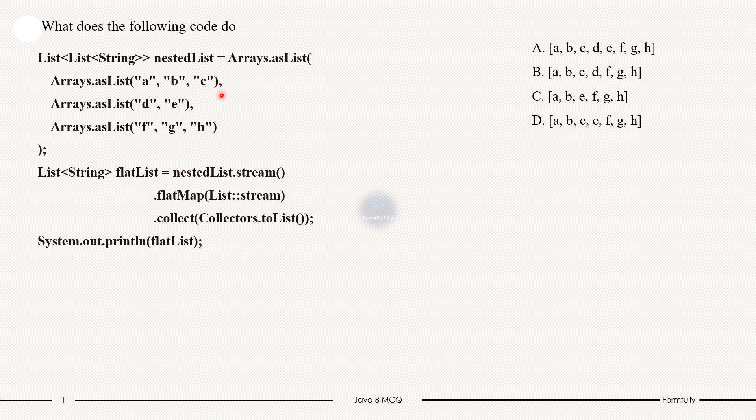Then moving towards next step, that is nestedList.stream(), which first converts the nested list into a stream using nestedList.stream(). At this point, each element in the stream is still a list of strings.